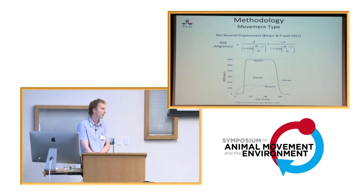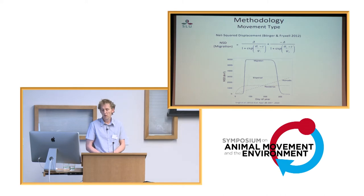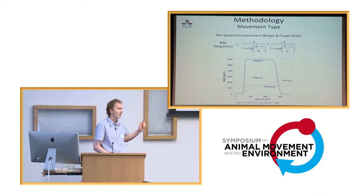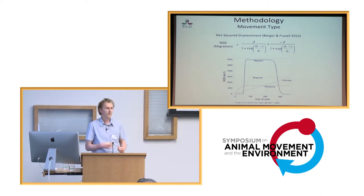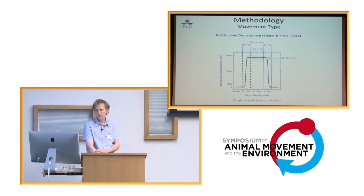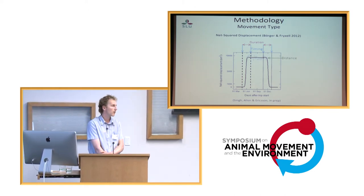In terms of methodology, the first step was to understand the types of movement we're seeing in the population — whether this is migratory, sedentary, dispersal, or nomadic. For this we use the net squared displacement approach. This is the only equation you'll see, but basically you can fit movement models to the displacement of a species over time, and based on the fit of that model you can determine their movement strategy. What's nice about this method is it can also provide information on the duration and timing of movements, which I use later in my study.